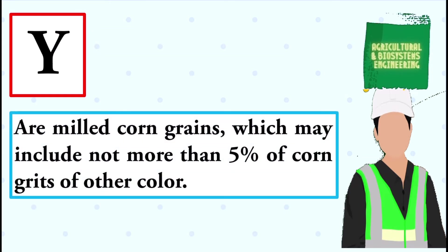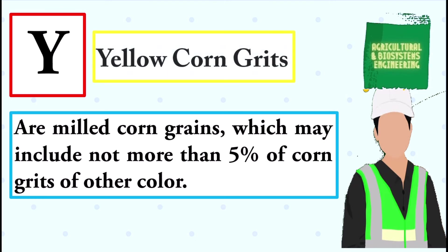Are milled corn grains which may include not more than 5% of corn grits of other color. The answer is yellow corn grits.